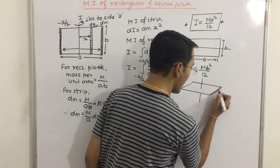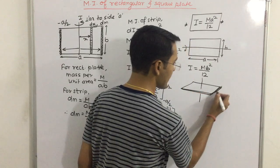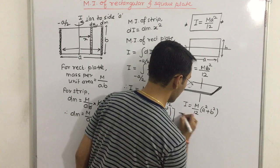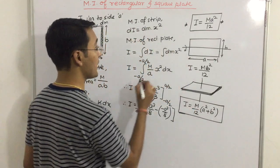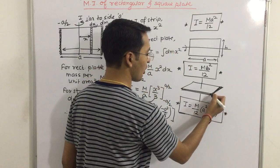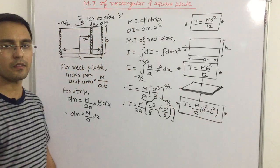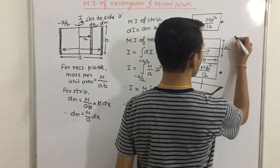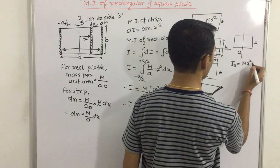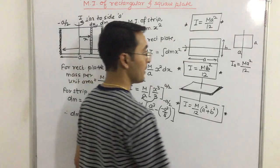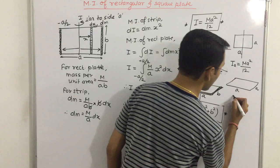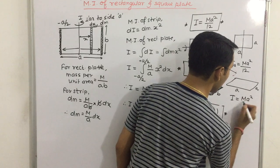In this case, it will be combination of both sides. Moment of inertia will be m by 12 bracket A square plus B square. These are the three moment of inertia. For square plate, if this was A and this was B, now both are A. B square ke jagah A square, so I is equal to m A square by 6. This is for square plate.